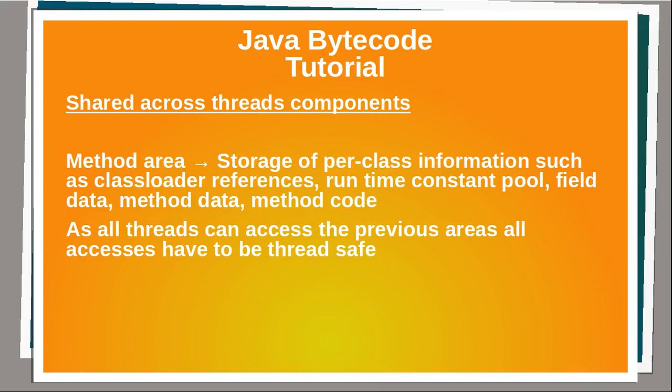Method area: storage of per-class information such as class loader references, runtime constant pool, field data, method data, and method code. As all threads can access the previous areas, all accesses have to be thread-safe.